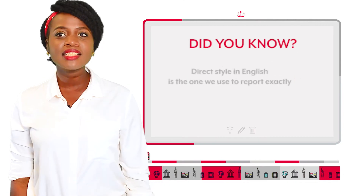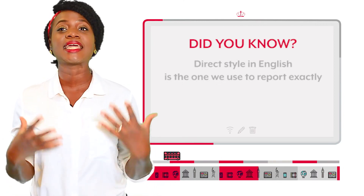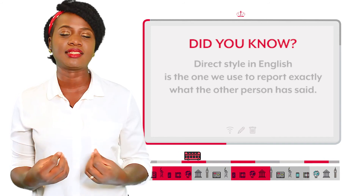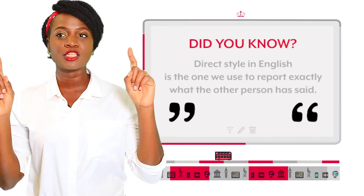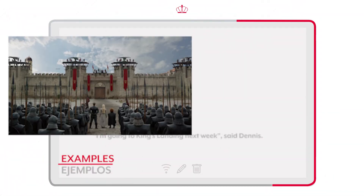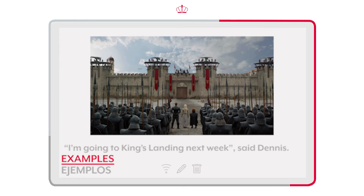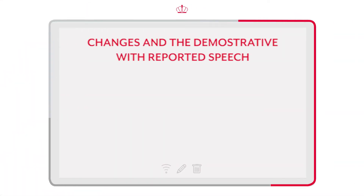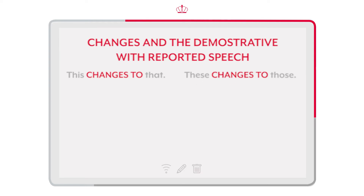Did you know? The direct style in English is the one we use to report exactly what the other person has said, usually placed in quotation marks word by word. Example: 'I'm going to King's Landing next week,' said Dennis. Changes in demonstratives with reported speech: 'this' changes to 'that'; 'these' changes to 'those'.